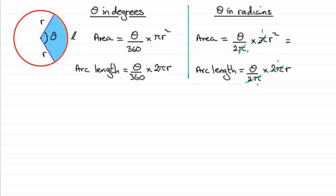then this one here reduces down to theta r squared over 2. Some people know it as a half theta r squared or a half r squared theta. That's up to you. And for this one, the arc length reduces down to theta times r, or r theta. Again, it doesn't matter which way round you obviously do that.